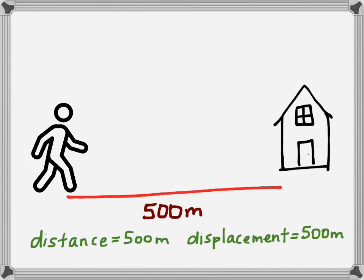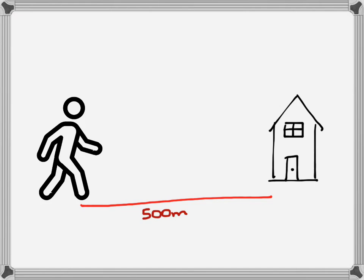There is one difference though — we need to add something extra to displacement, and that's direction. So not only have we gone 500 meters, but we've gone 500 meters to the east. That's going to be important as we start to look at more complex problems. Distance does not have to have a direction, but displacement really should. Same situation: we're walking home, we're at the corner, we go 500 meters east to our house. But then when we get home, we realize we were supposed to go work on a project with our friend who lives two doors down.